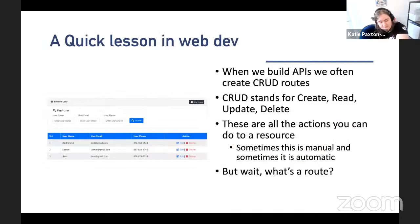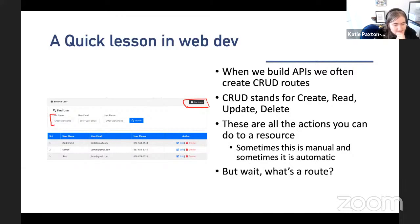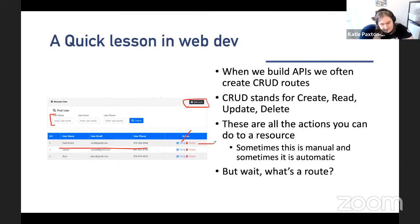A quick lesson in web development: when we build APIs as developers, we often create something called CRUD routes. CRUD stands for Create, Read, Update, and Delete — that's what you can do to a resource. You can delete a resource, add a resource, update it, and read it. Looking at a screenshot, we have an Add button (create), a way of searching and reading data (read), Edit (update), and Delete. A resource means anything in a web application — users, posts, videos, comments, live stream chat, and more.